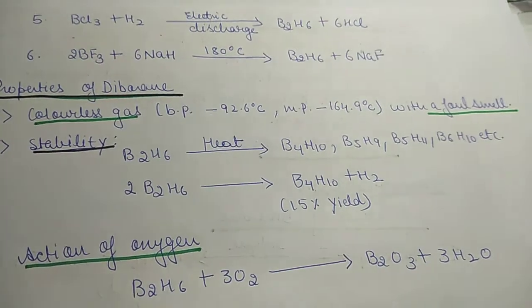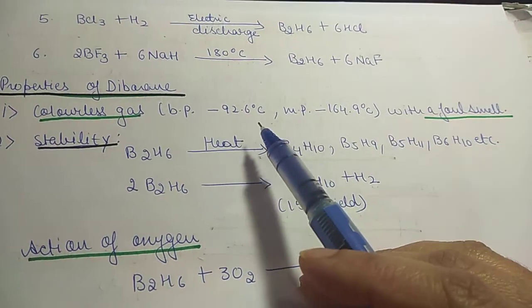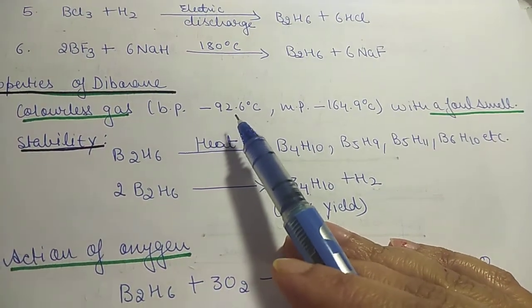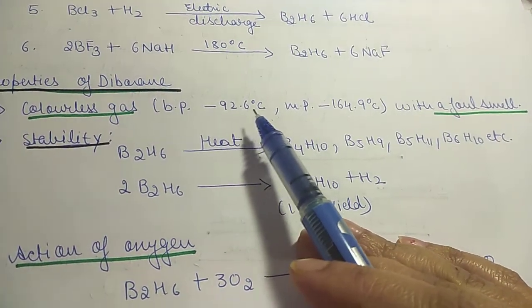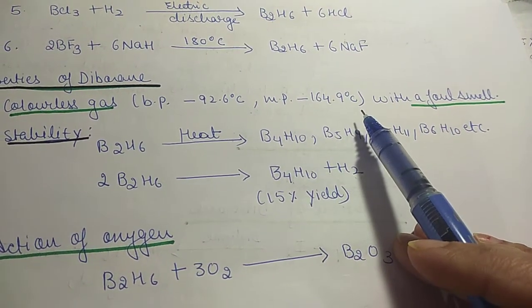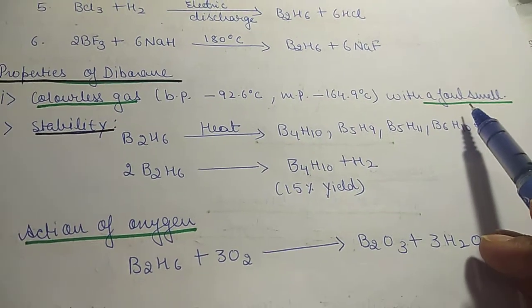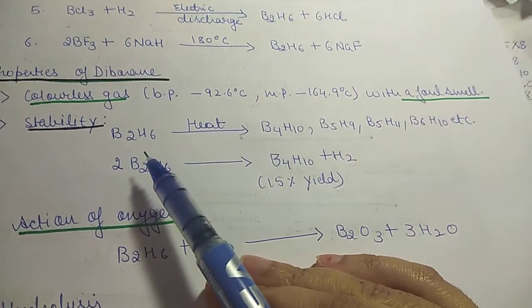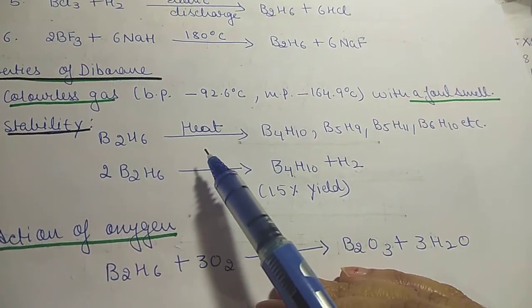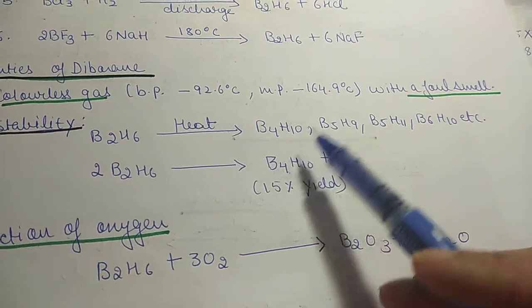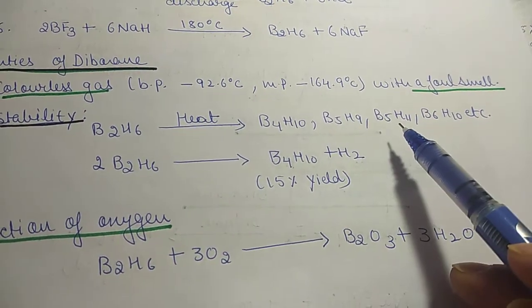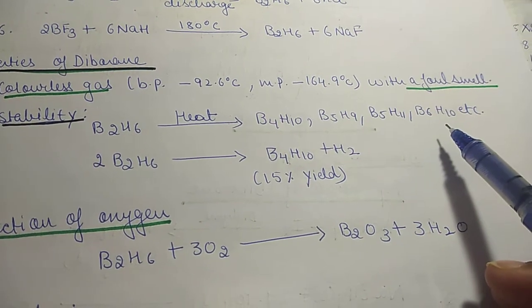Next, what are its physical properties? It is a colorless gas, boiling point is minus 92.6 degrees Celsius, and melting point is minus 164.9 degrees Celsius, and it has a foul smell. On heating B2H6, it gives various products like B4H10, B5H9, B5H11, B6H10, etc.